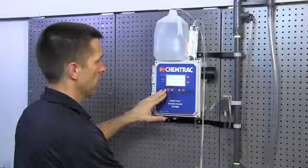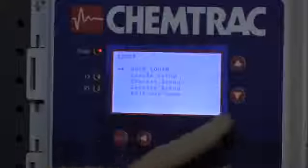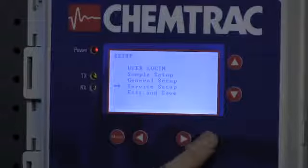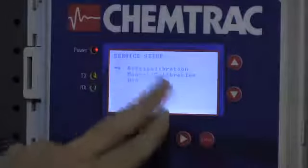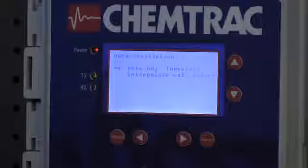Now we're going to go into the menu to calibrate the 5 micron spheres. So, we're going to hit menu. And we're going to scroll down to service setup. Hit enter. Auto calibration. Hit enter. Auto adjust thresholds. Hit enter.